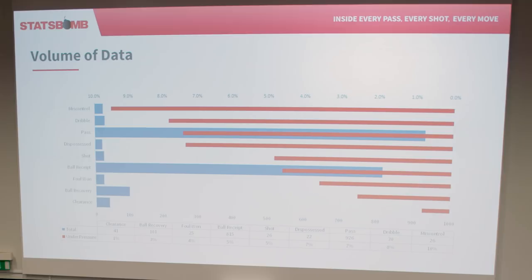For dribbles under pressure: when we mark a dribble as under pressure, it's because the pressing player — the defender — is initiating the need for a take-on, as opposed to the attacker actively moving at speed and taking them on. We make a small determination there. So it's 120 events every game, each one warped and changed by the presence of pressure.